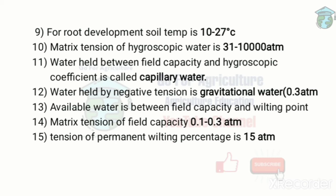The matric tension of field capacity is 0.1 to 0.3 atmosphere. Field capacity is when macropores drain their water and are filled by air, while micropores are still filled with water. The matric tension of permanent wilting percentage is 15 atmosphere. The permanent wilt condition means the plant will die if water is not added, and the water remaining in the soil is found in the smallest micropores.